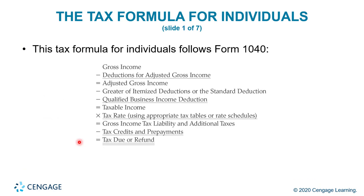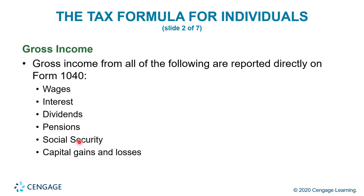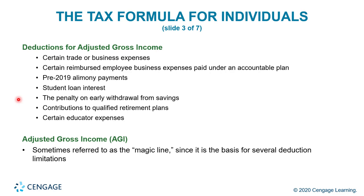Gross income items reported directly on Form 1040 include wages, interest, dividends, pensions, social security, and capital gains and losses. Deductions for adjusted gross income include certain trade or business expenses, certain reimbursed employee business expenses paid under an accountable plan, pre-2019 alimony payments, student loan interest, penalty for early withdrawal from savings, contributions to qualified retirement plans, and certain educator expenses. Adjusted gross income, or AGI, is sometimes referred to as the 'magic line' since it is the basis for several deductions and limitations — that amount is used to determine whether you qualify for other deductions.